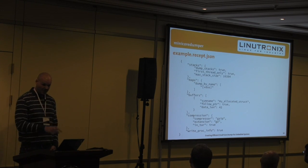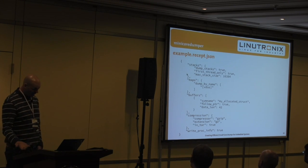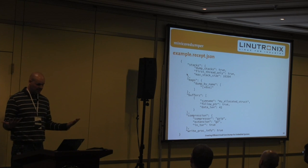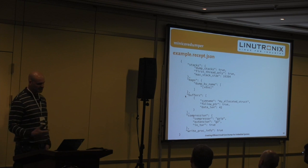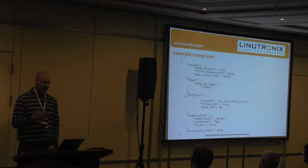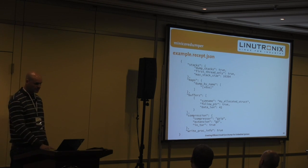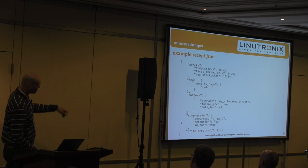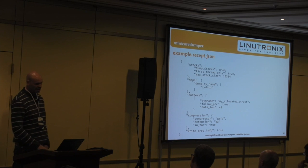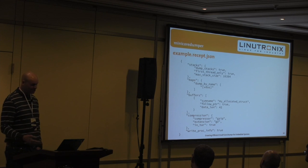Here's an example of a recept. You can choose if you want stacks dumped, if you only want the crashing stack or all stacks, and the size. Buffers are exported symbols — using the nm utility you can see what symbols are exported in binaries and choose to dump them. You can also specify the compression option; the compressor is an actual binary called — in this example we're using gzip. You can also specify bzip2 or cat if you want no compression.